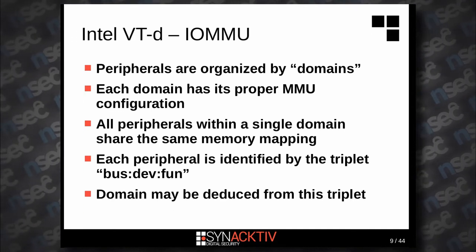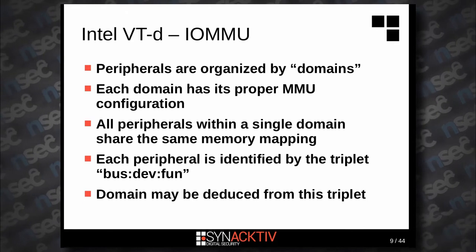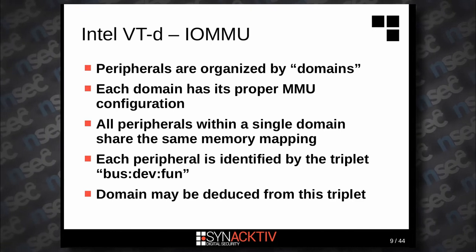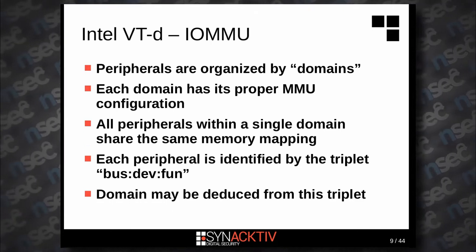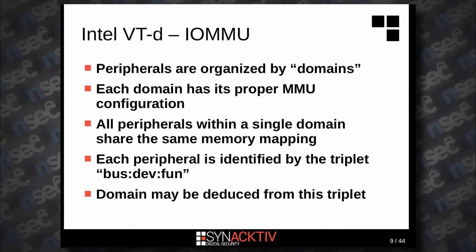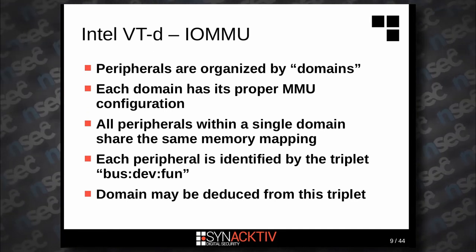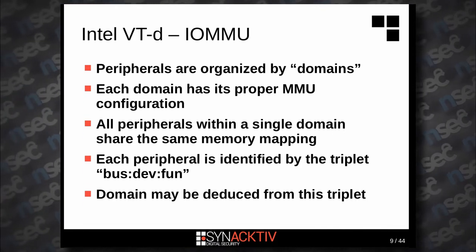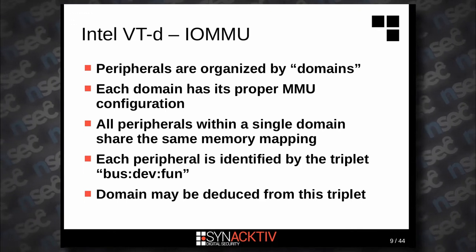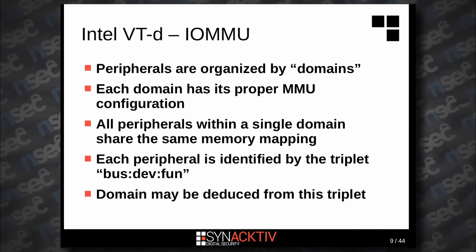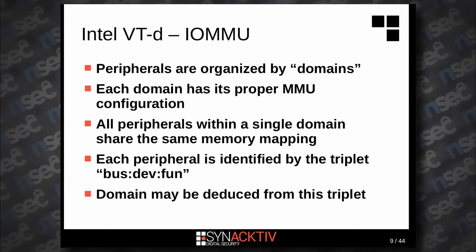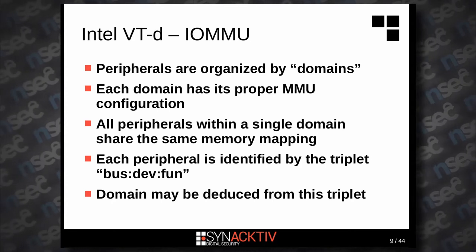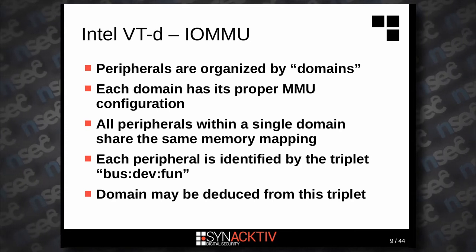To be identified, a peripheral is assigned a triplet: bus, dev, fun — where bus is the bus number, dev is the device number, and fun represents the function of the device. For example, if we have a hypothetical graphics card that also makes coffee, we would have two triplets: one with the function for graphics and one with the function for coffee.